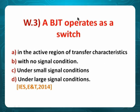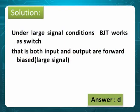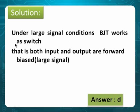Problem 3: A BJT operates as a switch in what region? When talking about a switch, it is high currents or no currents. When both junctions are forward, it acts as an ON switch — meaning more current, large current. Therefore option D, under large currents.